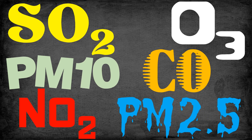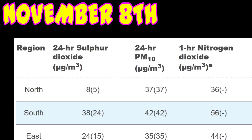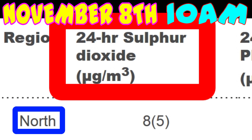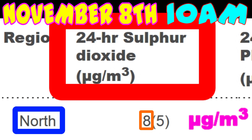So for example, on November 8th at 10am in the north, the 24-hour sulfur dioxide reading was 8 micrograms per cubic meter. In other words, over the preceding 24 hours, in the north, for every cubic meter of air, there was an average of 8 micrograms of sulfur dioxide.